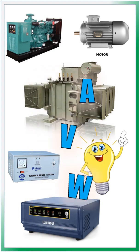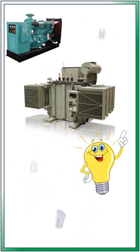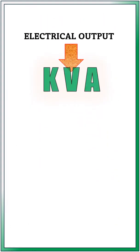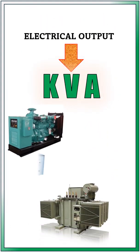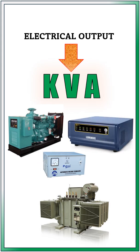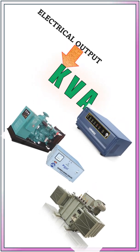All those equipments which provide electrical output are rated in kVA. Generator, transformer, stabilizer, inverter — all of these give electrical output and individually they don't work like a load. Their only work is to supply the power, let it be active power or reactive power.